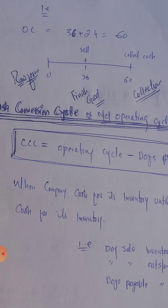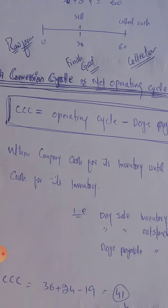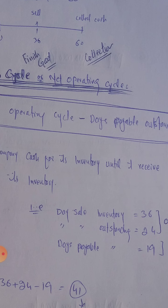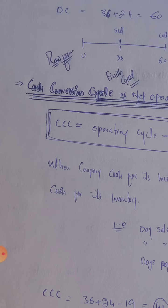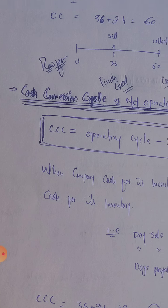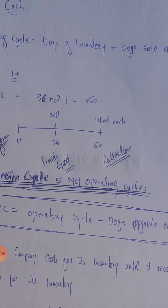Next is the net operating cycle, also called the cash conversion cycle or CCC. Here, the company purchases raw materials, converts them into finished goods, sells them out, and then recollects the cash — just as with the operating cycle. However, one important point is missing from the operating cycle that we need to consider for the cash conversion cycle.